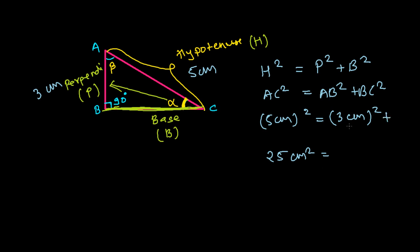5 square is 25 centimeter square, and 3 centimeter square is 9 centimeter square. So my base should be such that after adding this, it equals 25. This is 9 already, so it should be 16 centimeter square. Then only 9 plus 16 will be 25, so this is 4 centimeters.